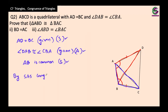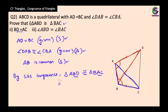By SAS congruence, triangle ABD is congruent to triangle BAC. For the second part, we need to show that BD equals AC. BD and AC are the last two letters of each triangle respectively, so they are in the same position. Therefore, BD equals AC because they are corresponding parts of congruent triangles.